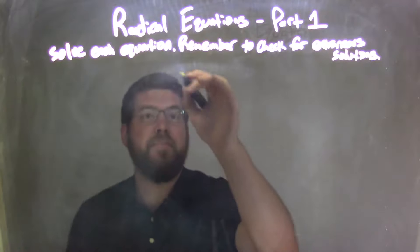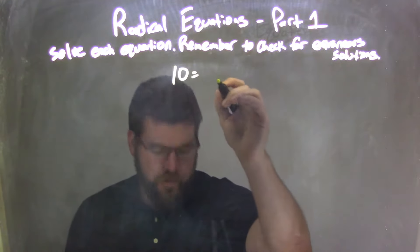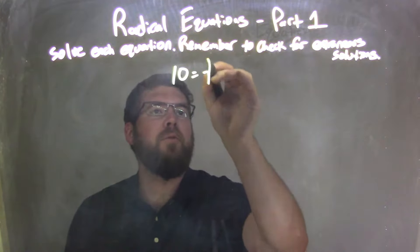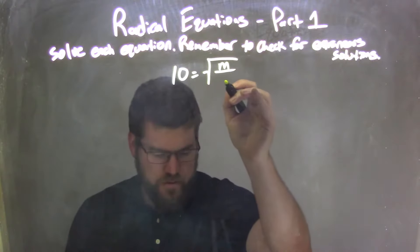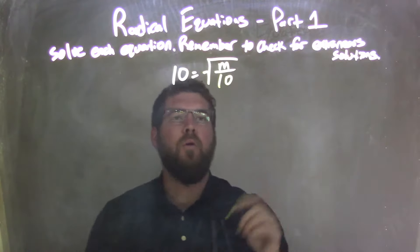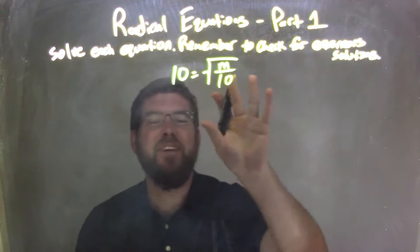So if I was given this equation, n equals the square root of m over 10. Well, first thing I need to get rid of is the square root.